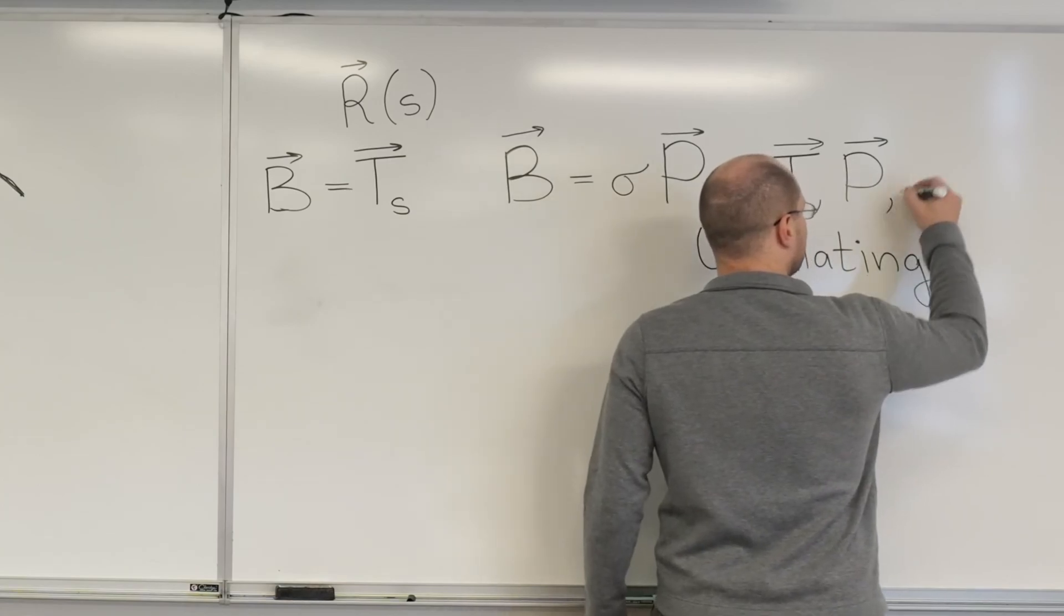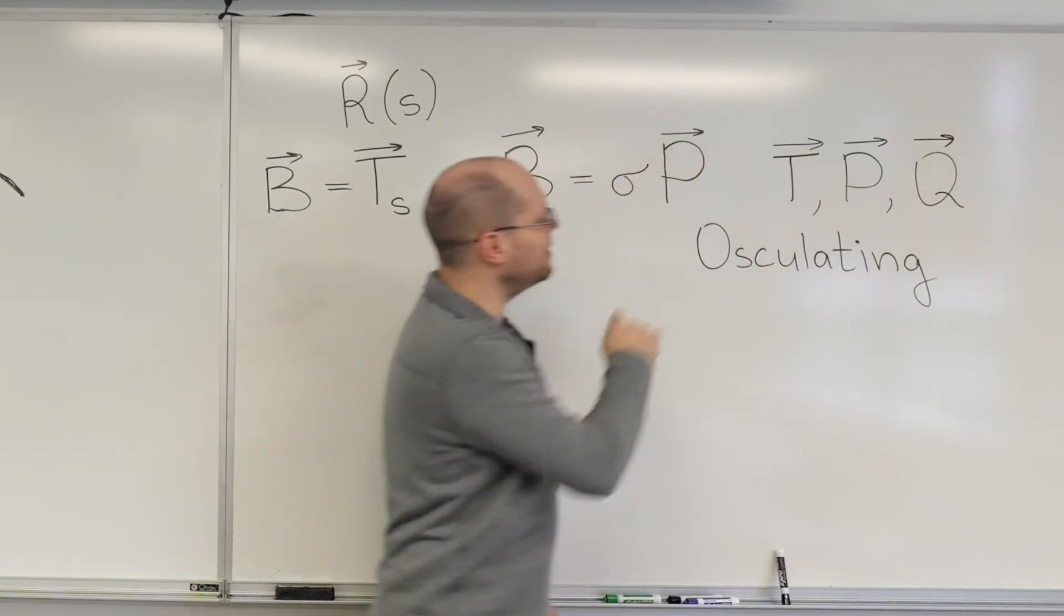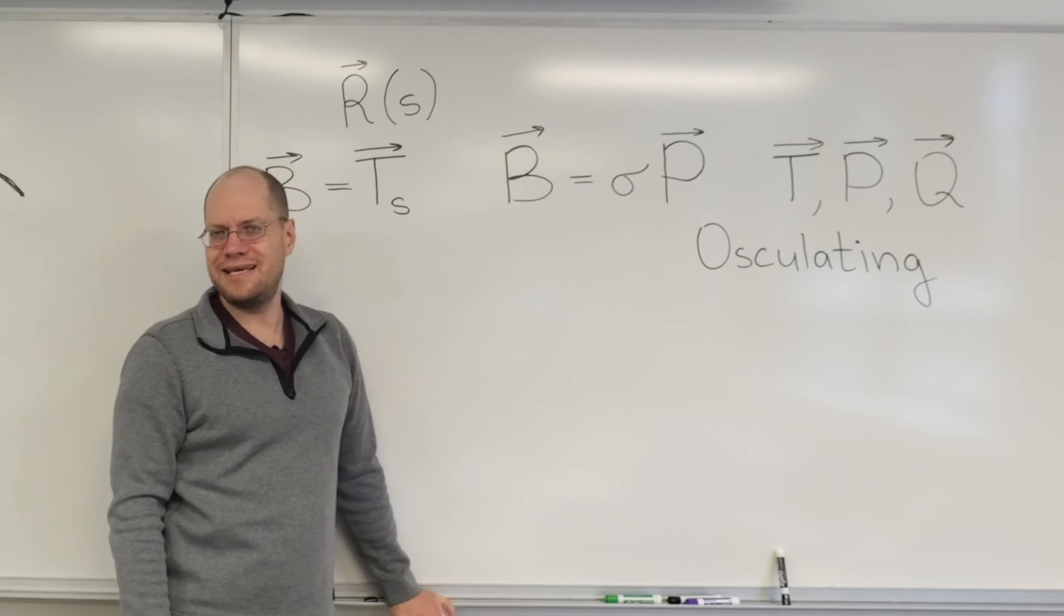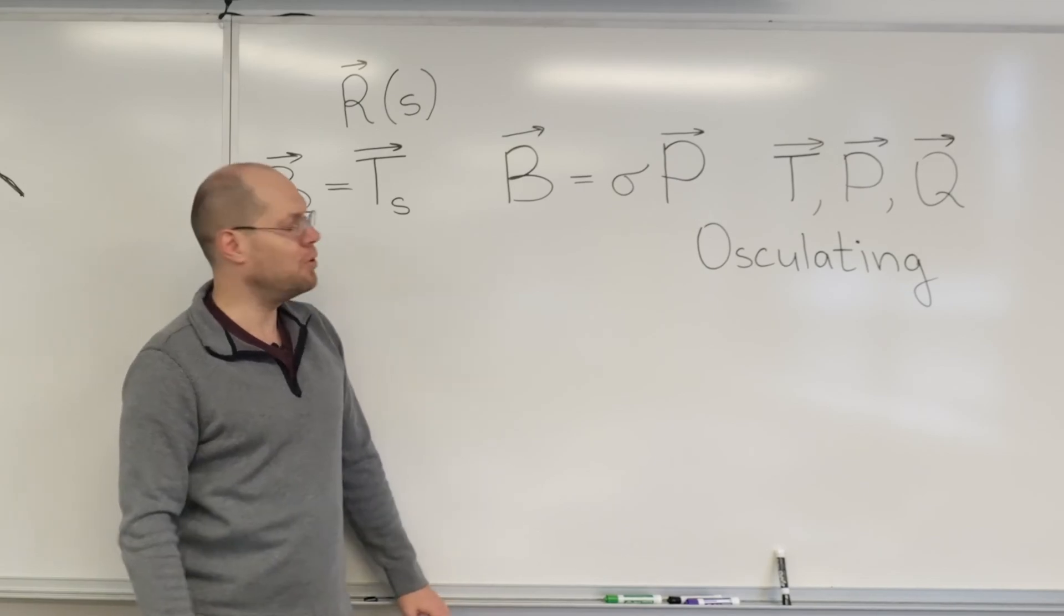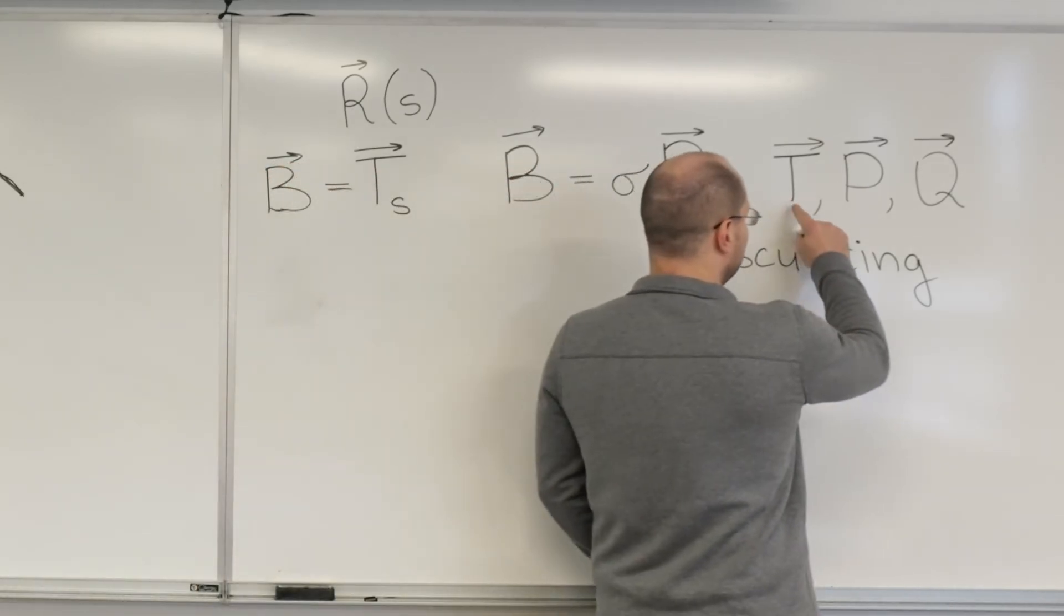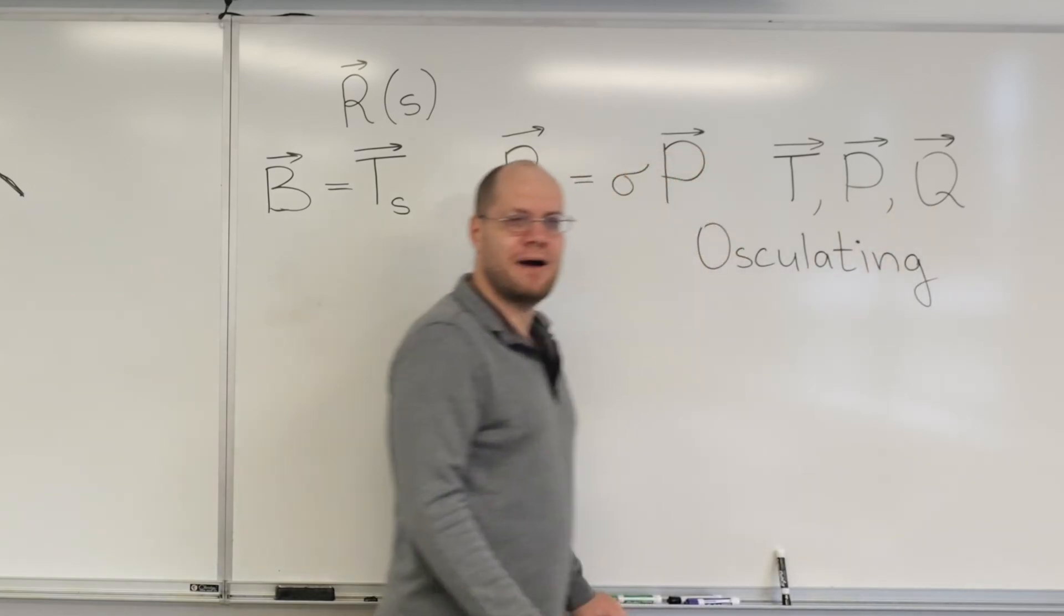And so we'll add a vector Q that's orthogonal to both T and P and points in the direction such that the triplet T, P, and Q is positively oriented.